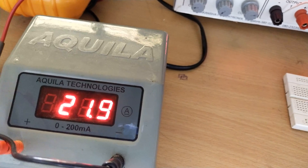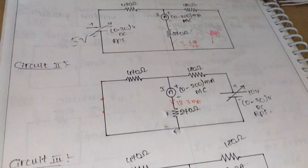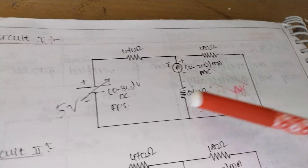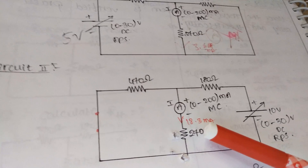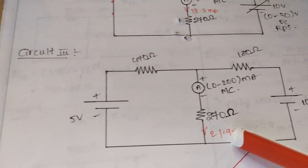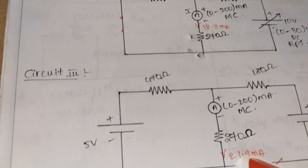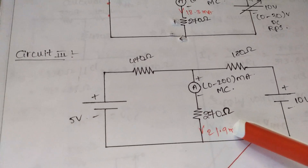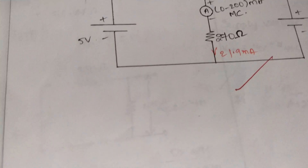With both sources connected, the ammeter reads 21.9 milliamps through the 270 ohm resistance. In step one, with the 10 volt source short-circuited, the current was 3.6 milliamps. In step two, with the 5 volt source short-circuited, the current was 18.3 milliamps. Adding these two currents: 18.3 plus 3.6 equals 21.9 milliamps, which matches the measured value, verifying the superposition theorem.